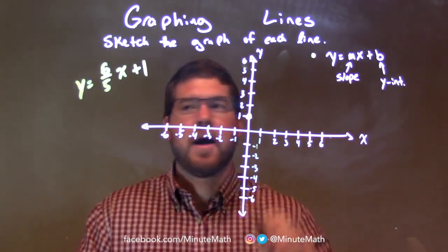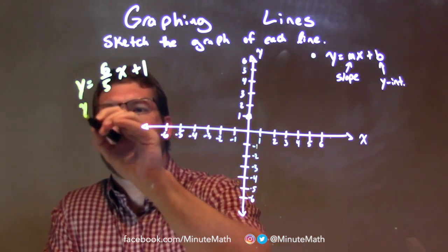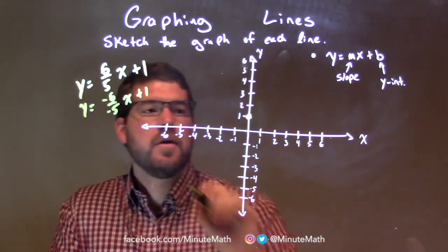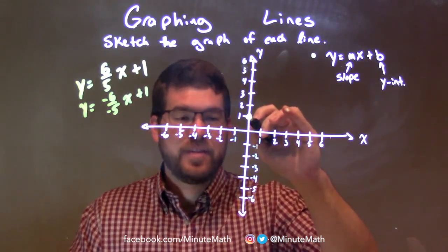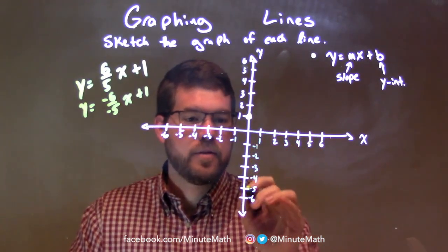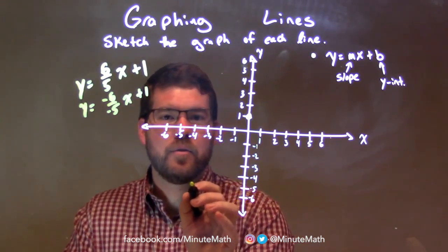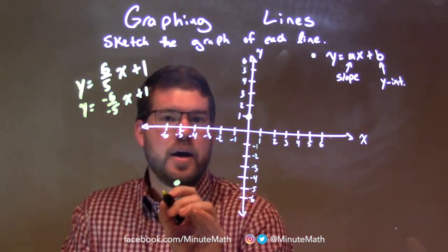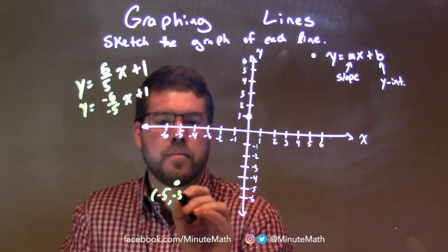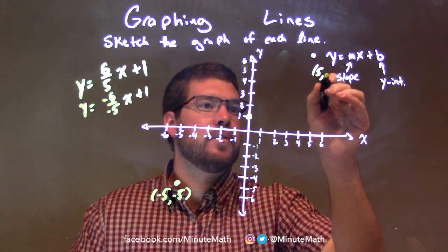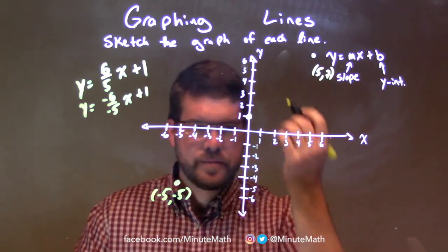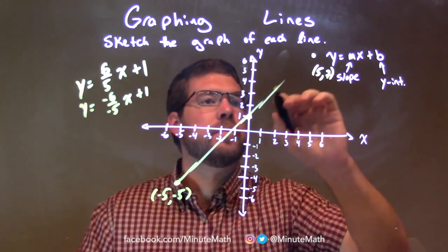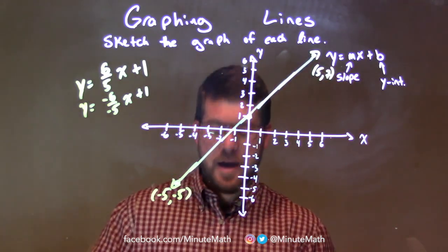If you want a point on the graph, one thing I like to use: y equals 6 fifths x is the same thing as negative 6 over negative 5 x plus 1. So you can go down 6 units — 1, 2, 3, 4, 5, 6 — and then over 5 units to the left: 1, 2, 3, 4, 5. That point is negative 5 comma negative 5. And this point here is 5 comma positive 7. And we have our point 0 comma 1. So we can connect these lines — there we go, and now we have our graph.